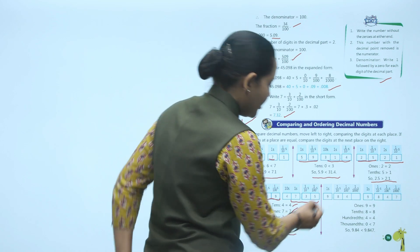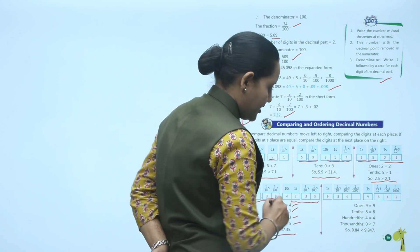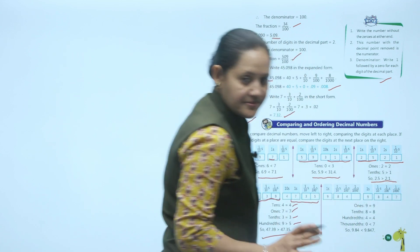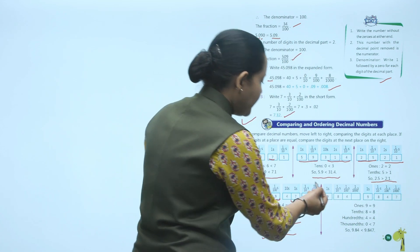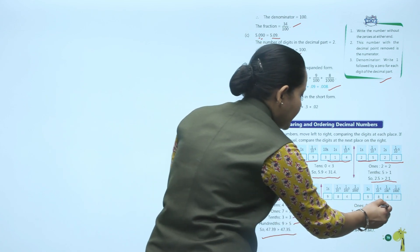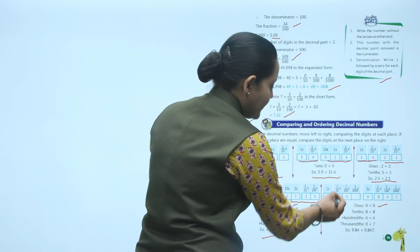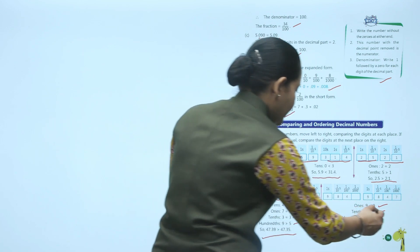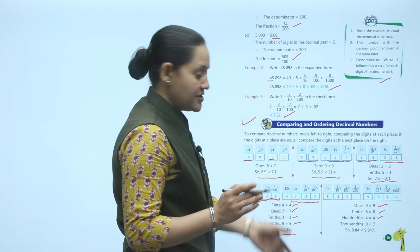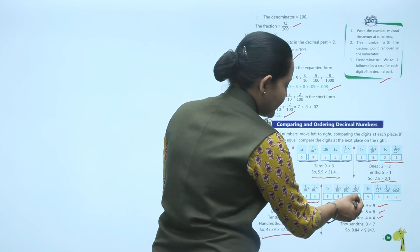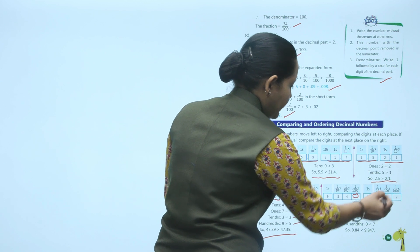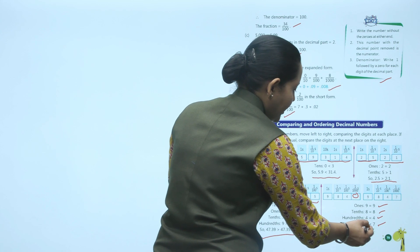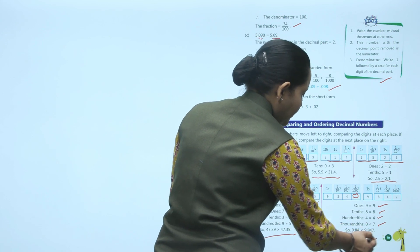Another example: comparing 9.847 and 9.84. Ones place: both have 9. Tenths: both have 8. Hundredths: both have 4. Moving to thousandths: 9.847 has 7 and 9.84 has 0 (we treat the missing digit as zero). So 9.847 is greater than 9.84.